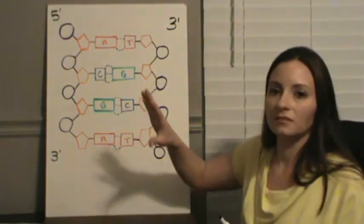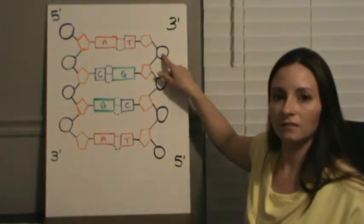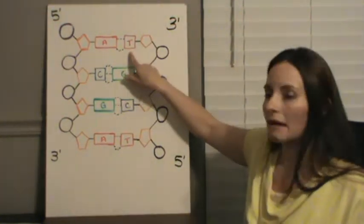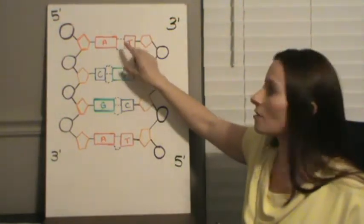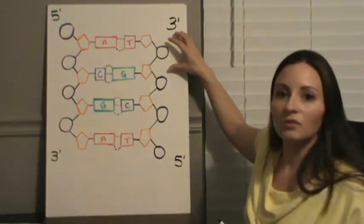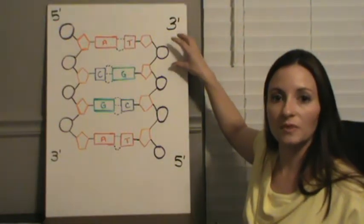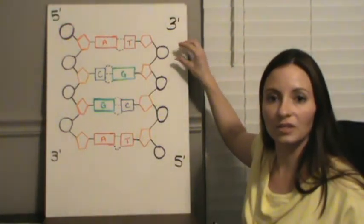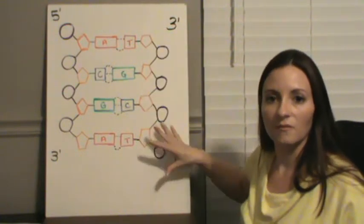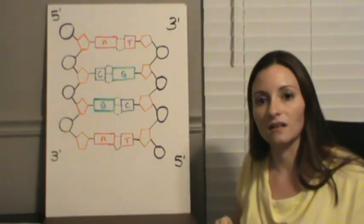So, we have phosphate, 5-carbon sugar, deoxyribose in DNA, and a base. The three of these pieces together make up a nucleotide. These three pieces together make up a nucleotide. And then lots of nucleotides together make up the nucleic acid of DNA.